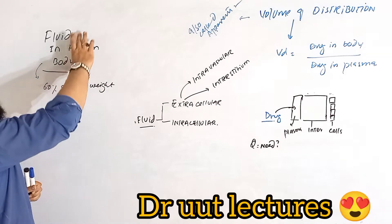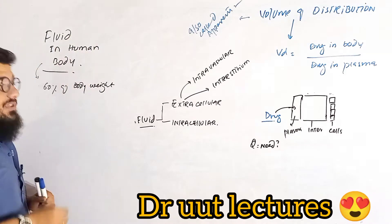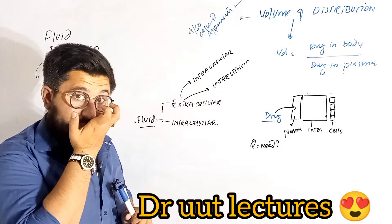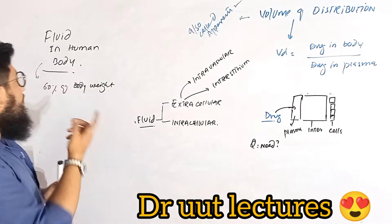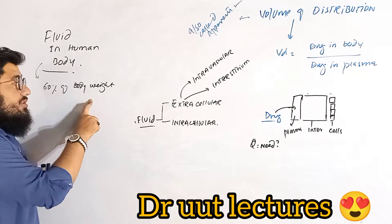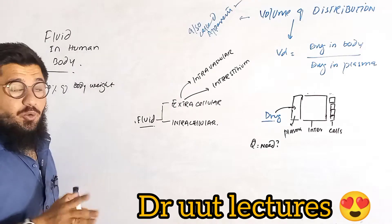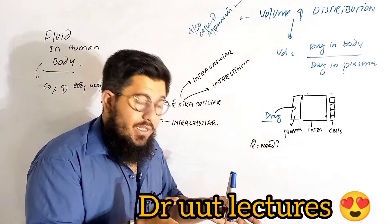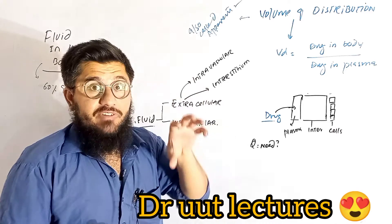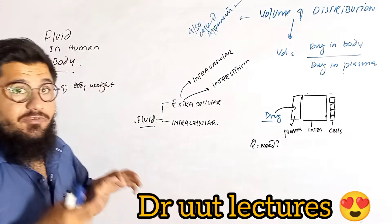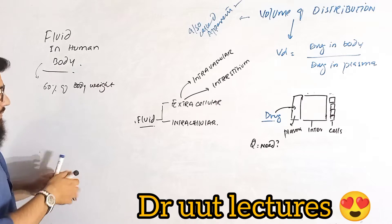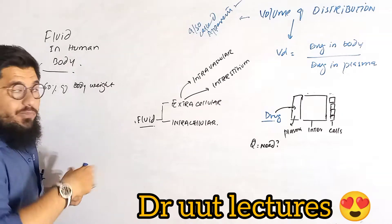Let us get started from the very first point: the fluid in the human body. By definition, the fluid in the human body is 60% of the body weight. Whatever is the weight of your body, 60% of that weight is actually the body fluid — meaning fluid composes 60% of your entire weight.